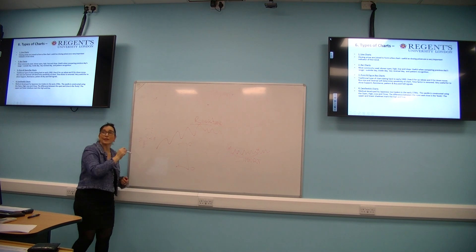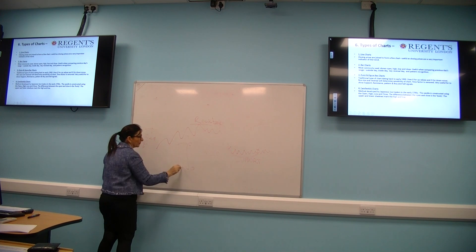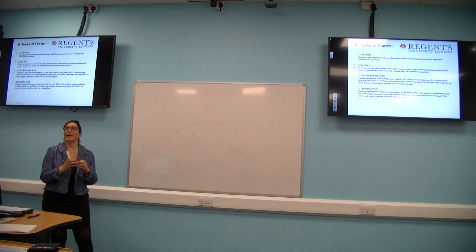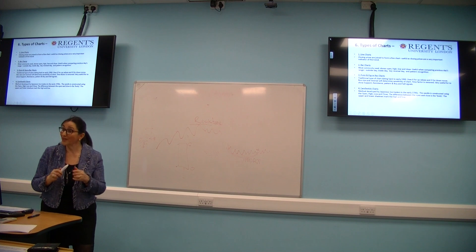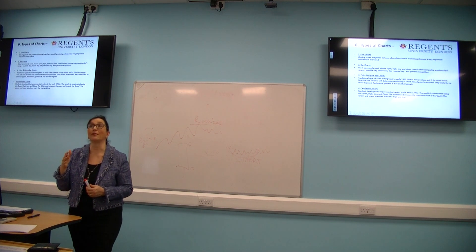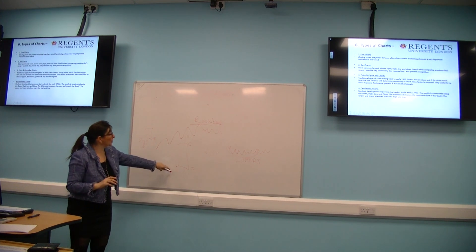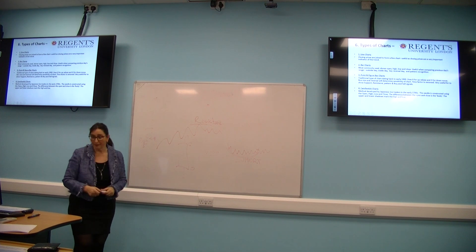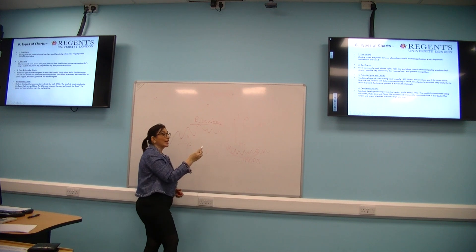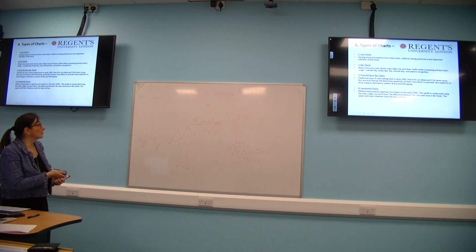The reason candlesticks are so popular is that you can see very quickly what's happened. This is your open and this is your close - the fact that the close is above the open makes this a bullish candle. Within that you've got the shadow - the highs and lows for the day. You've got all the information: open, close, high, low - but it's become more visual. A green one is bullish and a red one is bearish. Some packages use white for bullish and dark for bearish.